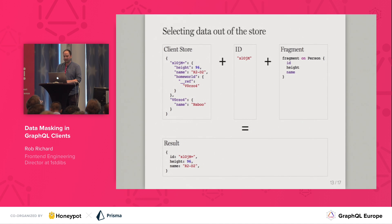Using this flattened store object, an ID reference, and a fragment, you could create a function that returns the correct data for a component. Only the correct fields will be returned even if additional data was fetched. This is what createFragmentContainer does internally.